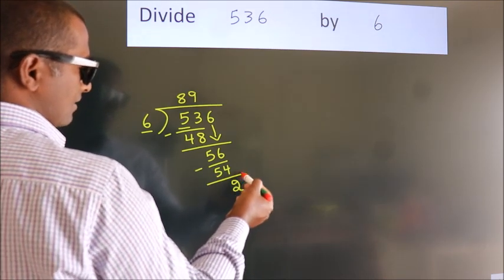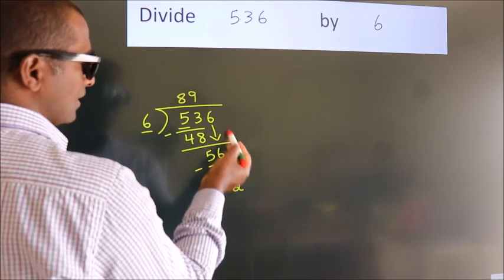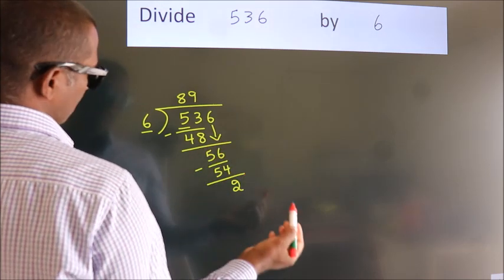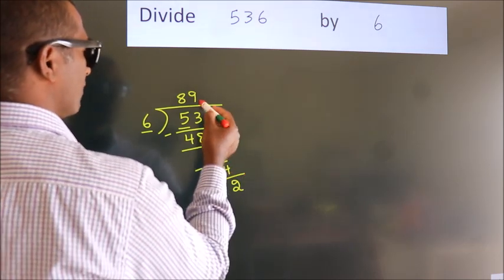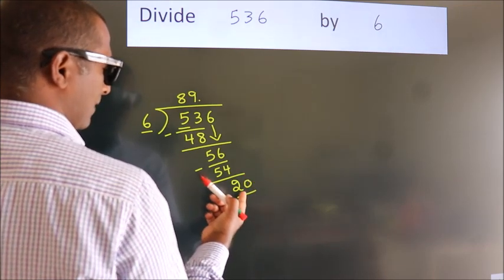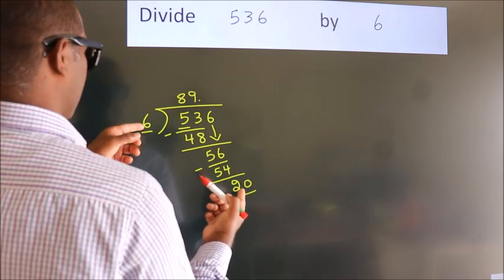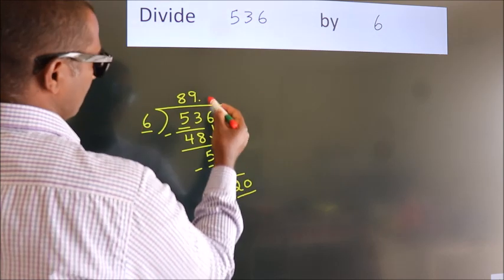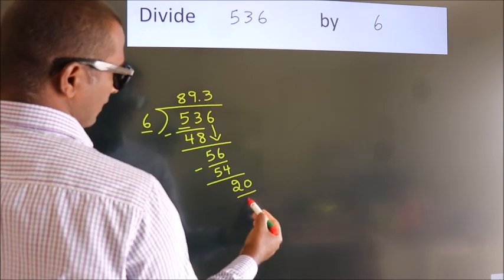After this no more numbers to bring down. So what we do is we put a dot and take 0. So 20. A number close to 20 in the 6 table is 6 times 3, which is 18.